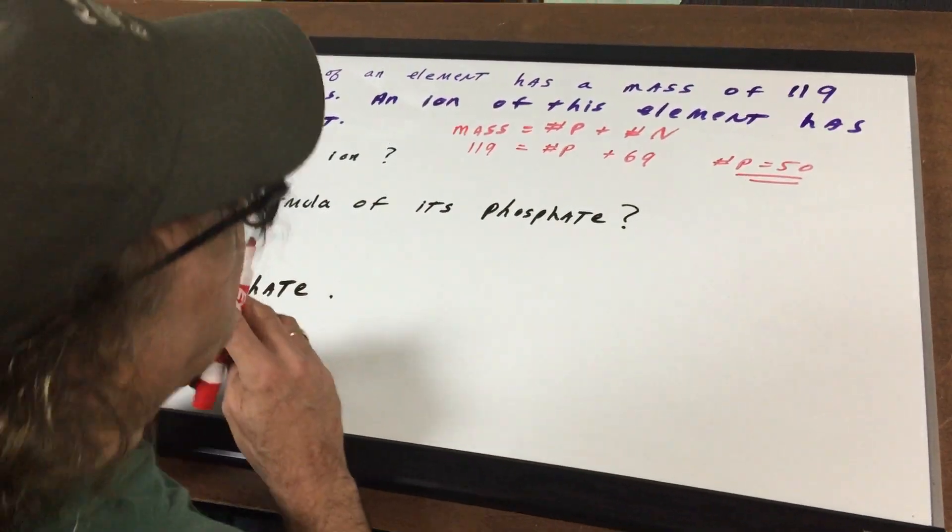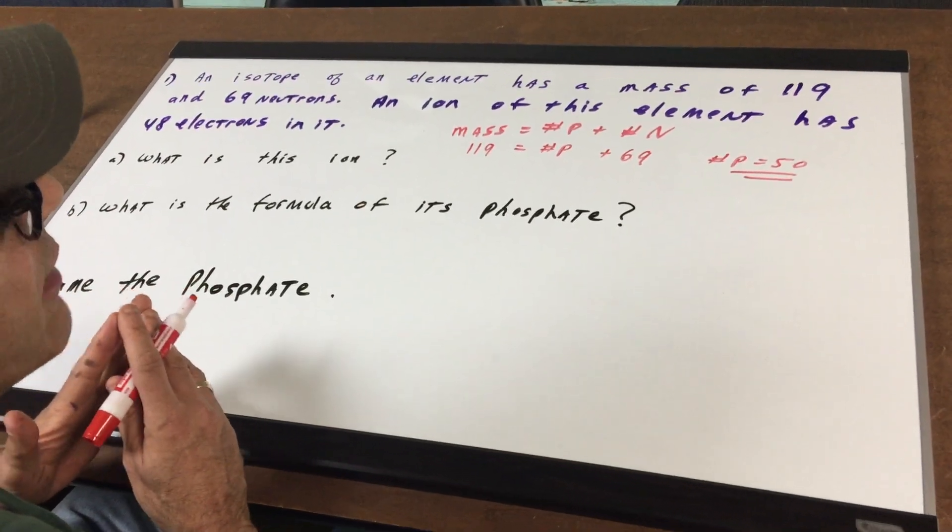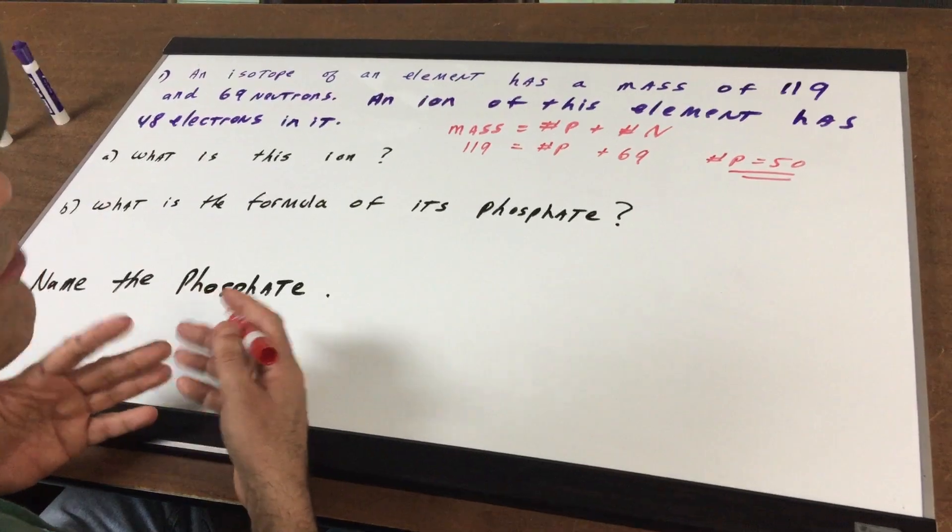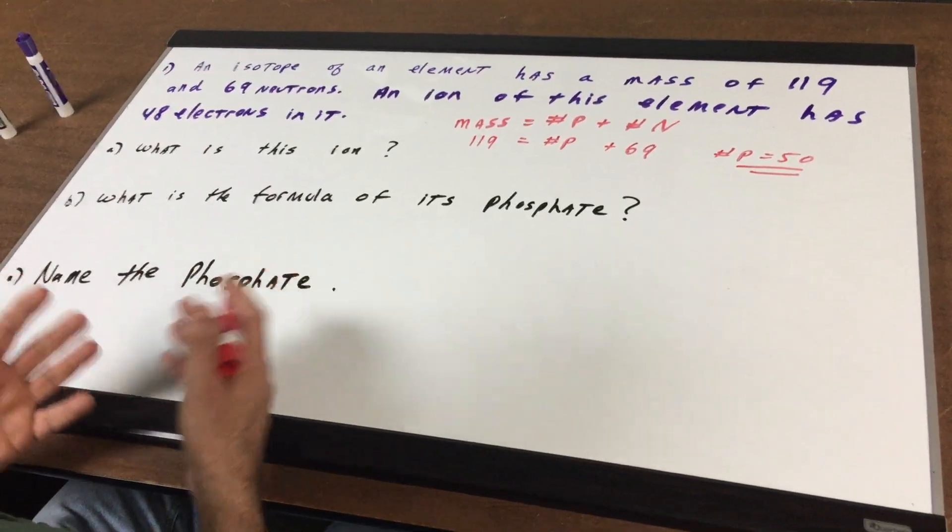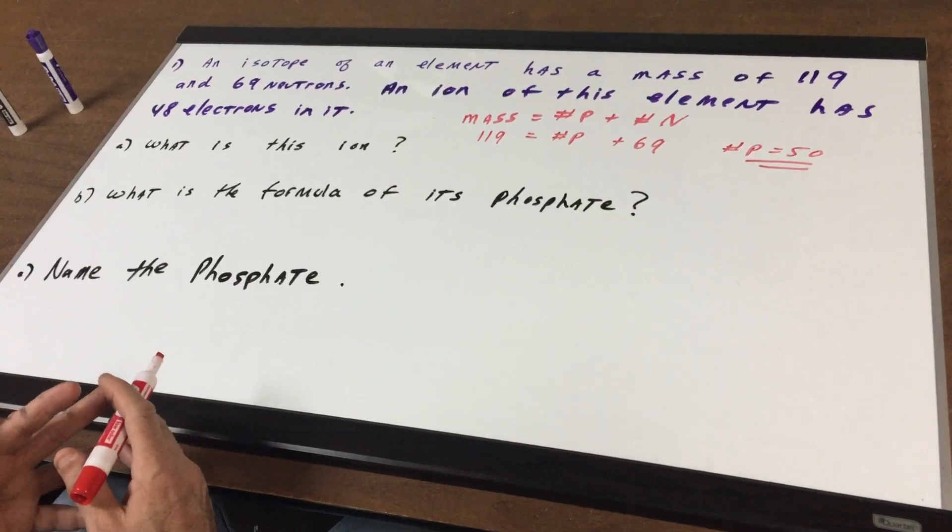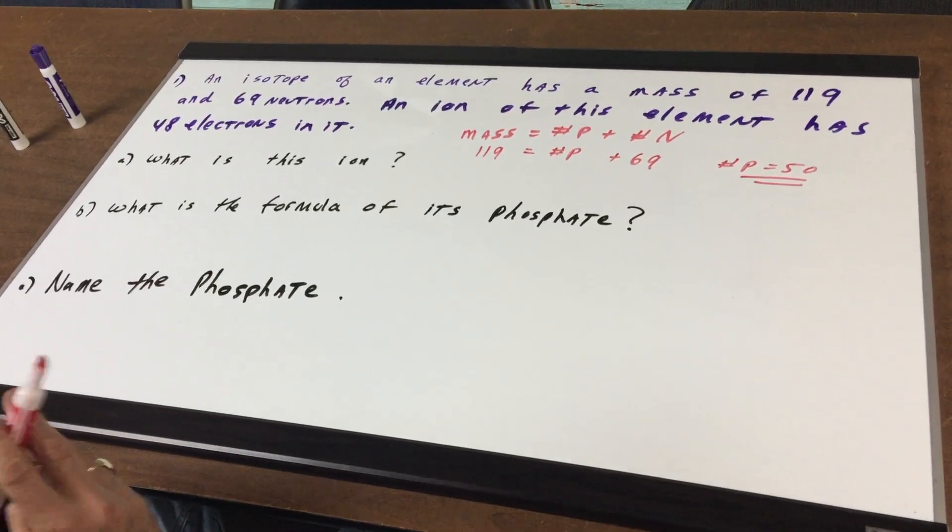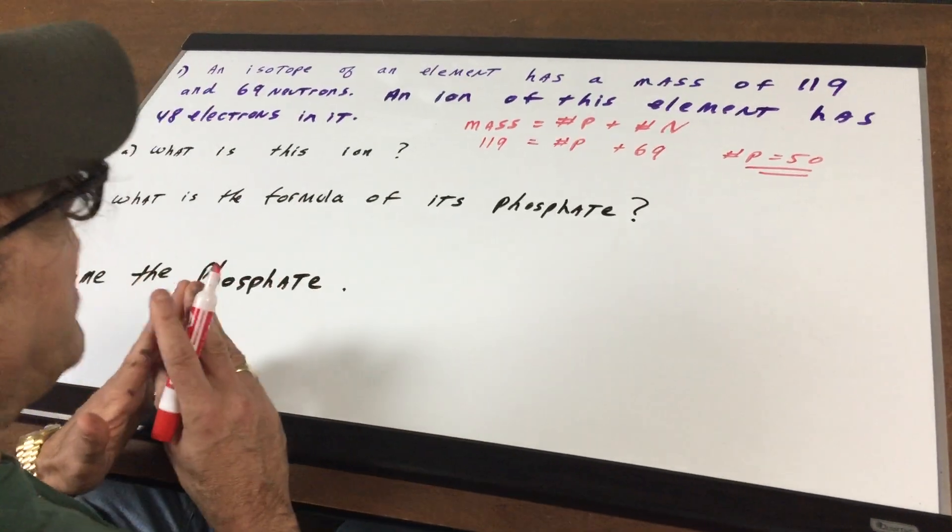If you remember, the number of protons is also called the atomic number and this identifies the element. So all I do is press my icon that you'll see on the DAT screen on the computer screen for the DAT and you'll see that 50 is the atomic number of the element tin. Now we know it's tin, Sn.